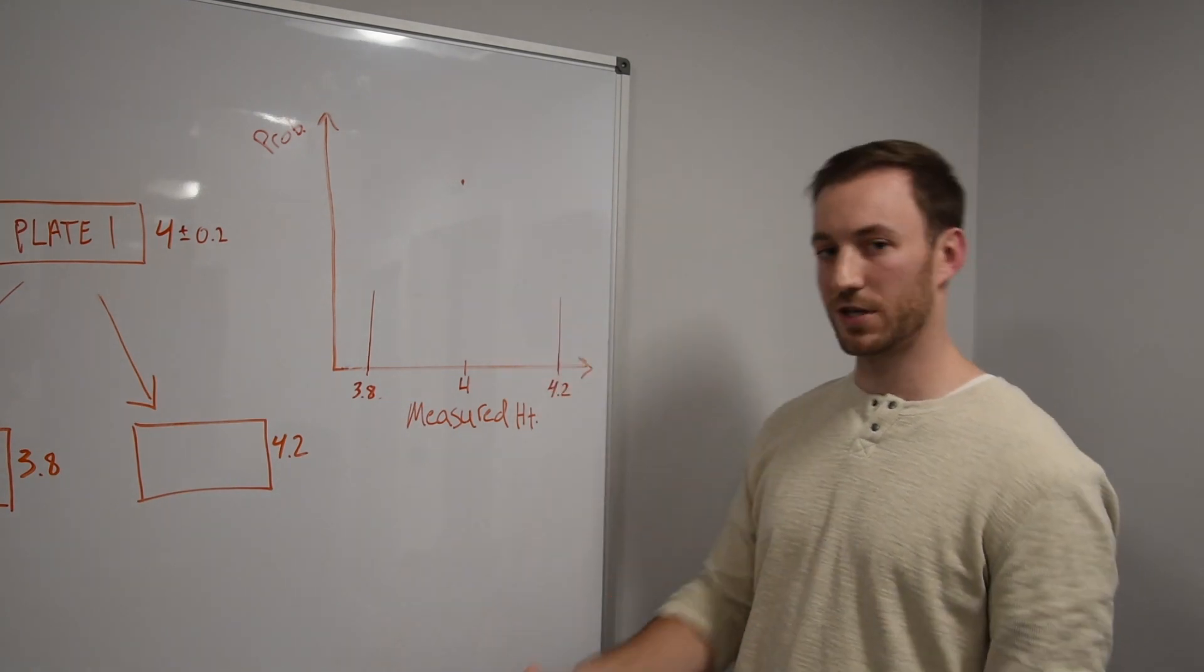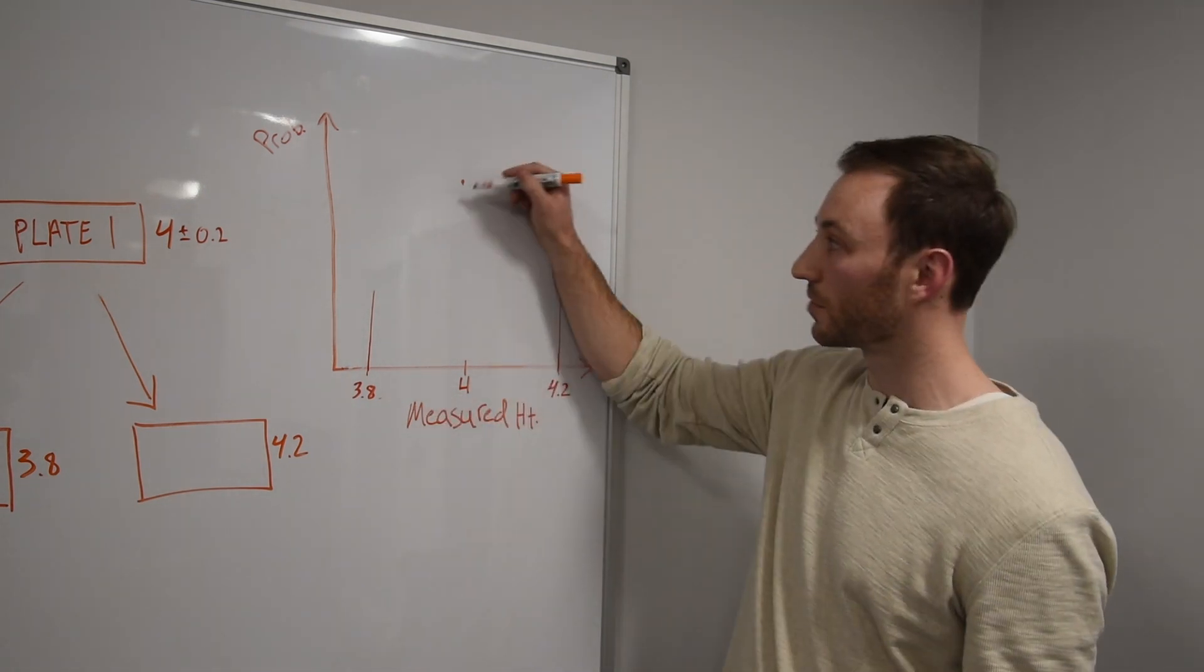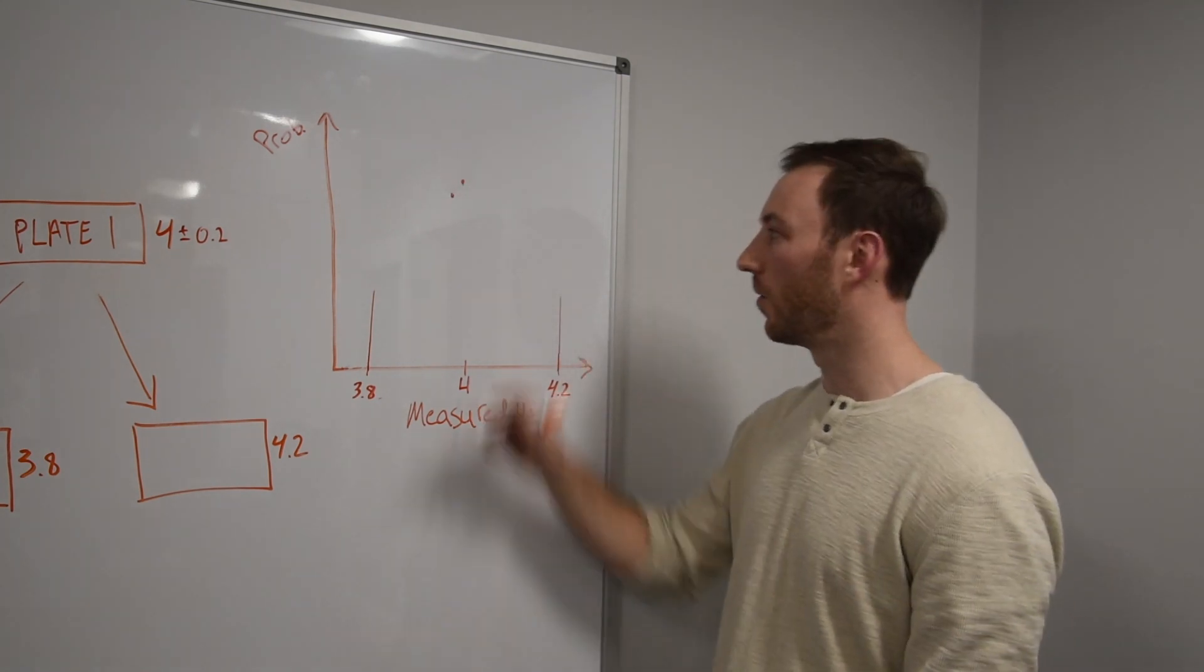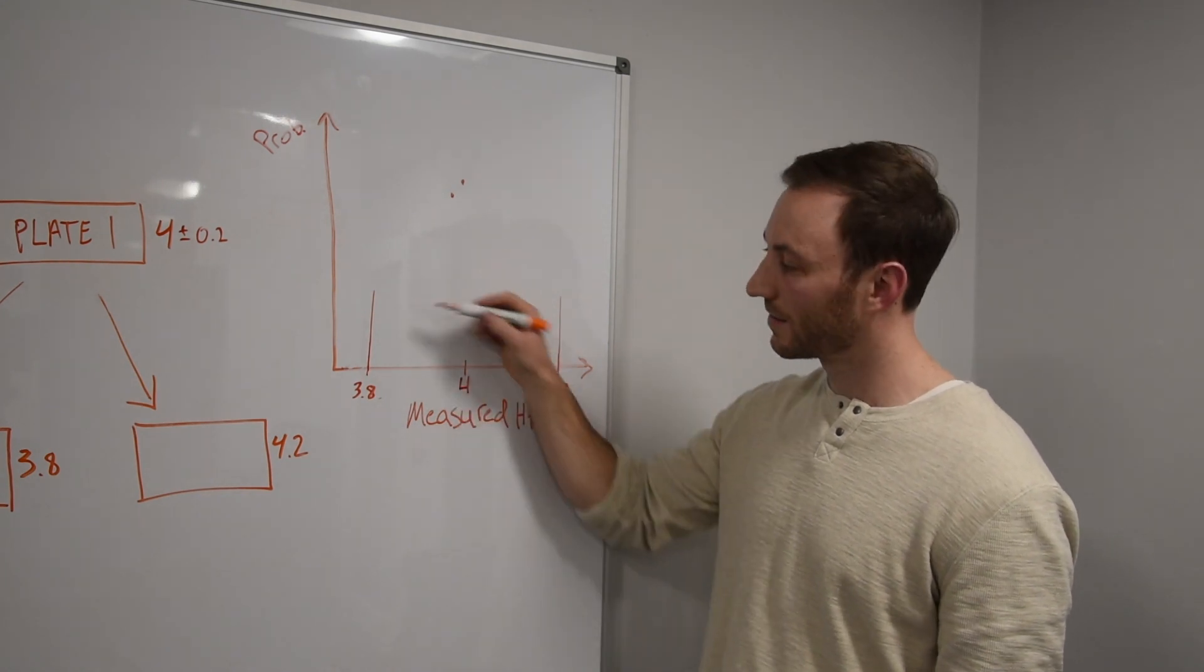And let's say we reach in again, we notice it's 3.995 millimeters. Chances of that, also pretty high because again, high accuracy machine. Now, as we get closer to these limits, the likelihood of that happening is less likely.